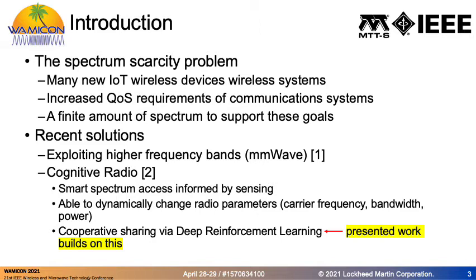This material addresses the problem of spectrum scarcity. With many new innovations in the Internet of Things and new wireless devices being invented and deployed, more and more spectrum is being used. Modern day communication systems require an increased quality of service, and the easiest way to achieve increased throughput and lower latencies is by using more bandwidth. With a finite amount of spectrum to support these goals, modern research has looked into technologies such as exploiting higher frequency bands with better hardware — known as millimeter wave.